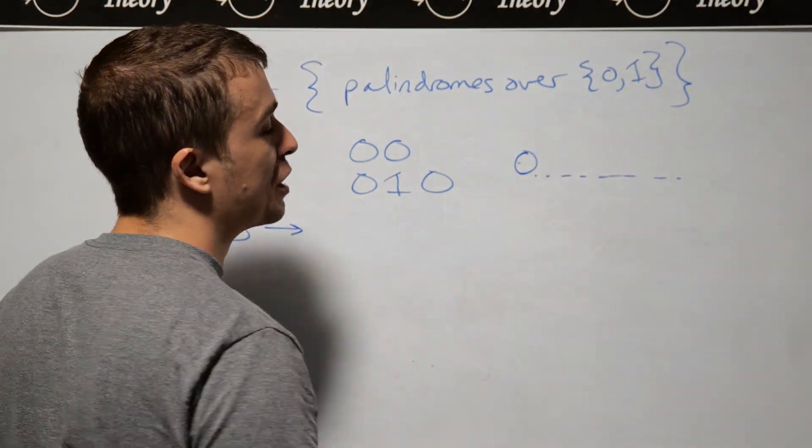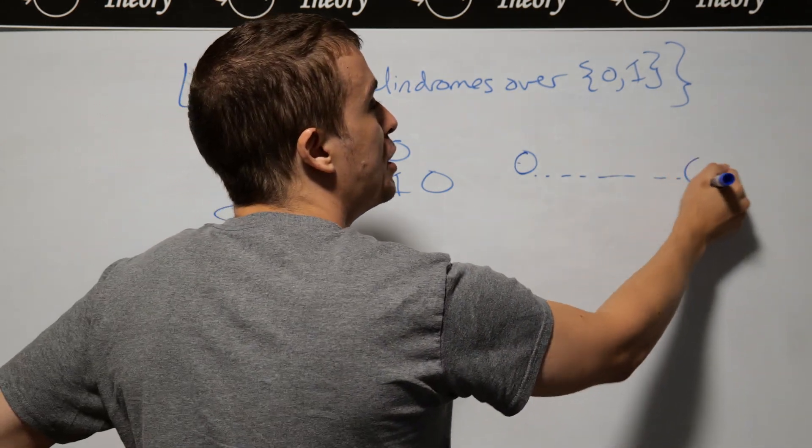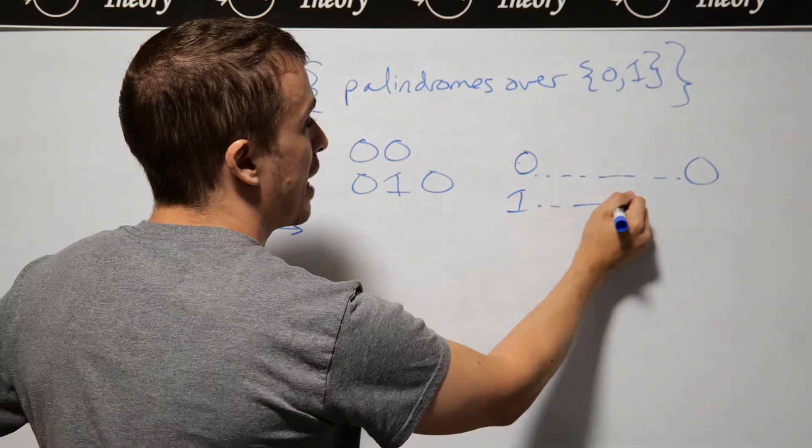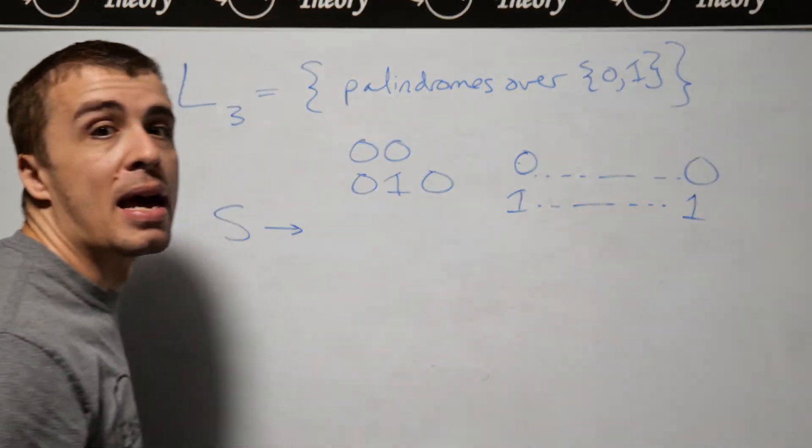If I see a 0 at the beginning, then I must see a 0 at the end. And if I see a 1 at the beginning, then I must see a 1 at the end also.